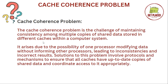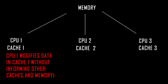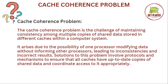The cache coherence problem arises when, for example, CPU1 modifies data in cache 1 without informing cache 2, cache 3, or the main memory. This leads to inconsistencies, which leads to incorrect results. Whenever there is a modification, it has to be updated in all caches — cache 1, cache 2, cache 3 — and in the main memory. If it is not updated, there will be incorrect results. To solve this problem, there are particular protocols and mechanisms that can keep all caches and memory up to date in a shared data scenario.